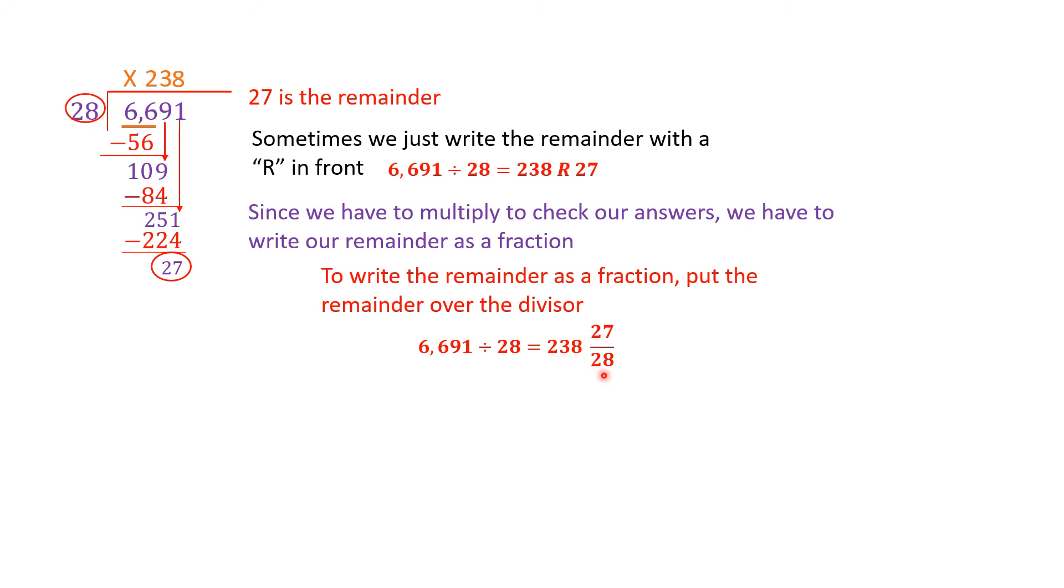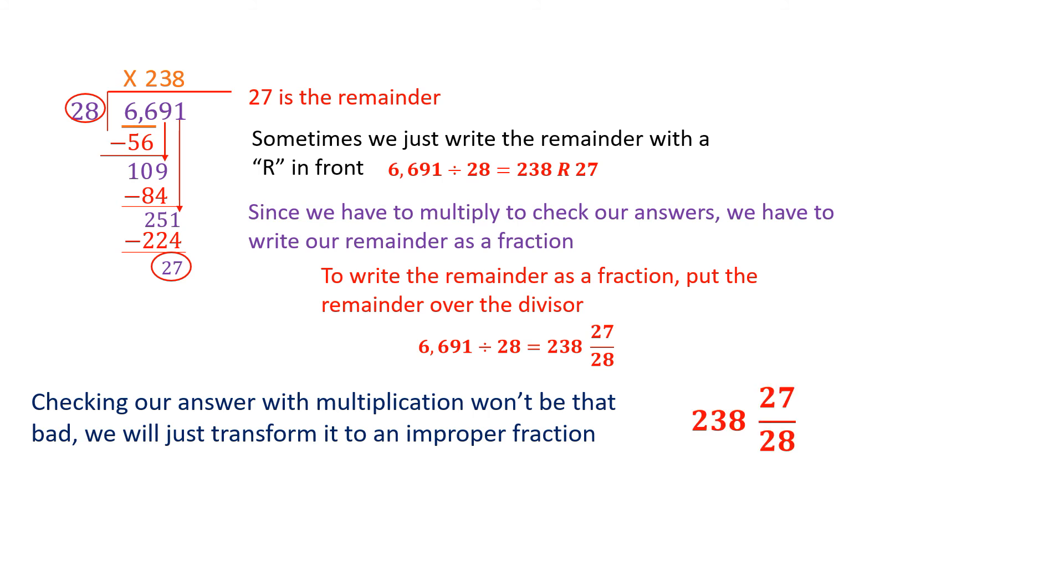I know you're thinking this is now awful and I wish I never asked how to do this problem, but it's not that bad. When we check our answer, all we're going to do is take this mixed number and write it as an improper fraction. So let's take the mixed number and let's write it as an improper fraction. Remember how to do that. We simply say 28 times 238 plus 27 and put it over 28. So we get (28 × 238) + 27 all over 28. 28 times 238 by the magic of a calculator, I'm sure you will do this by hand, is 6,664 plus 27 all over 28. Now let's just add them and we get 6,691 over 28.